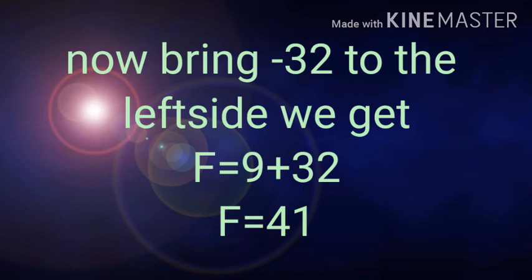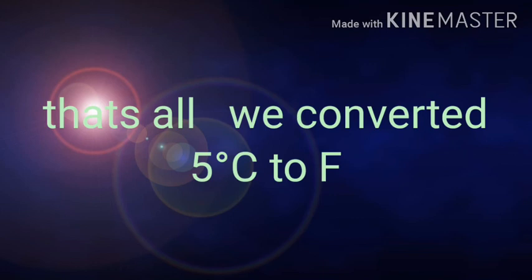9 plus 32 will give 41. So now the equation becomes F equal to 41. That's all. We have converted 5 degree Celsius to Fahrenheit.